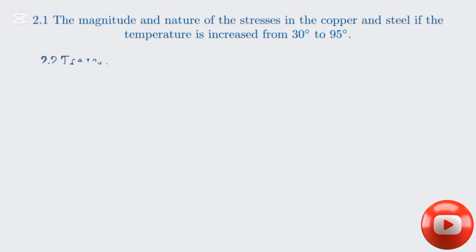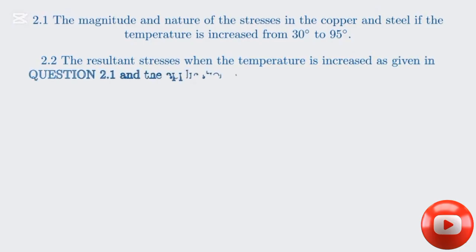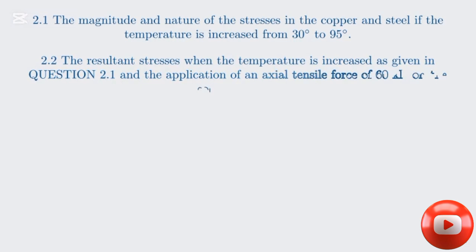Question 2.1 asks us to find the magnitude and nature of the stresses in the copper and steel if the temperature is increased from 30 to 95 degrees Celsius. This is a purely thermal stress problem. Question 2.2 asks for the resultant stresses if, on top of the temperature increase, we also apply an axial tensile force of 60 kilonewtons to the entire compound bar. Here, we'll combine the thermal stresses with those from the external load. Now let's start with the first part.